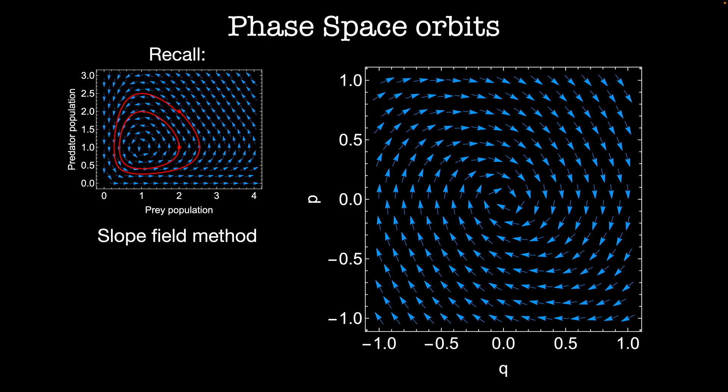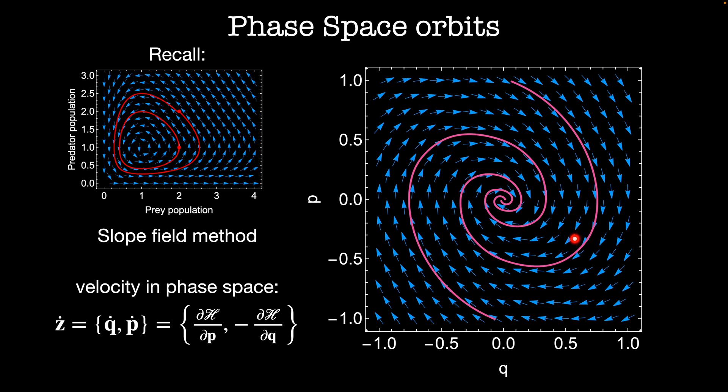The exact same thing happens when we look at Hamiltonian dynamics in phase space. Here's a plot of phase space, where q is on the x-axis and p is on the y-axis. We treat the vector field as a velocity in phase space, where the components of the velocity are given by Hamilton's equations. Z dot equals dH/dp and minus dH/dq. Any point is an initial condition, and the streamlines, which are the trajectory of my system, just flow along tangent to the blue vector field. In the rest of the video, we'll explore the consequences of this type of dynamics on phase space.